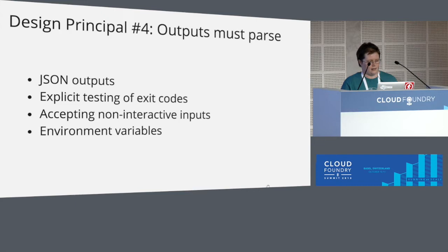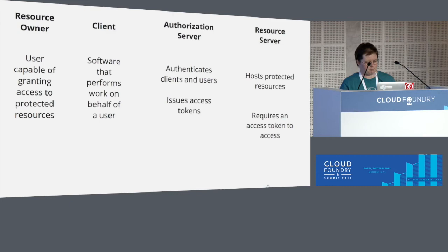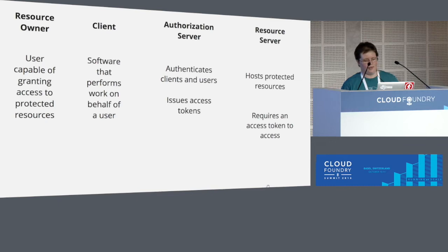That concludes the overview of learnings. Next I want to shift into a bit of an example — it's a bit contrived. I want us to imagine that we, the audience, are trying to create a client registration in the UAA for the CF CLI for the first time, as if that CLI doesn't exist and you're trying to develop it yourself. OAuth is a standard for solving the problem of delegated authorization, which basically means you as a user want to use a piece of software to perform some actions on your behalf.